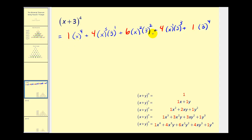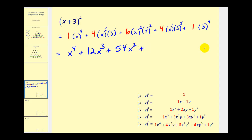Now we just have to simplify each term. We would have just x to the fourth, plus four times three gives twelve x to the third, plus six times three squared — three squared is nine, so nine times six is fifty-four x squared — plus four times three to the third, which is twenty-seven, times four gives one hundred eight x. And the last term would be one times three to the fourth, which is eighty-one.